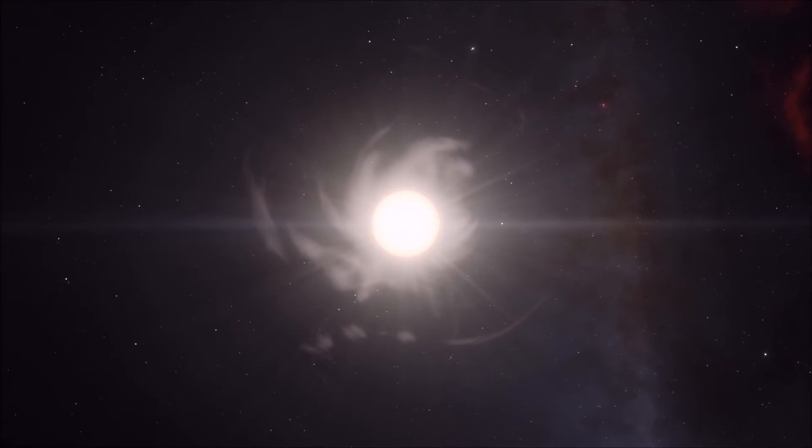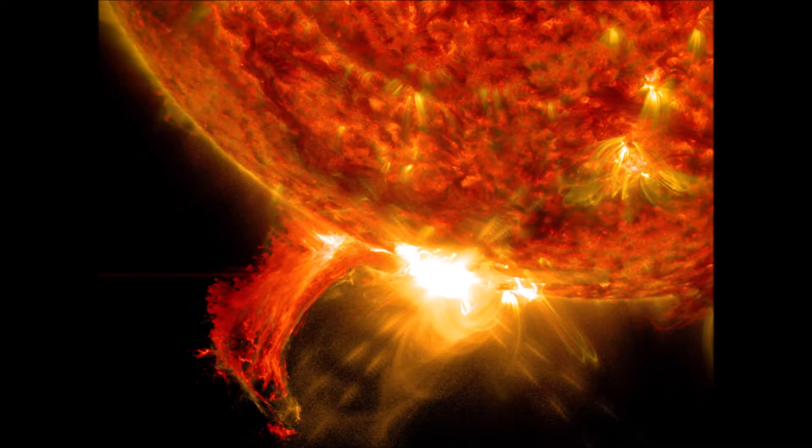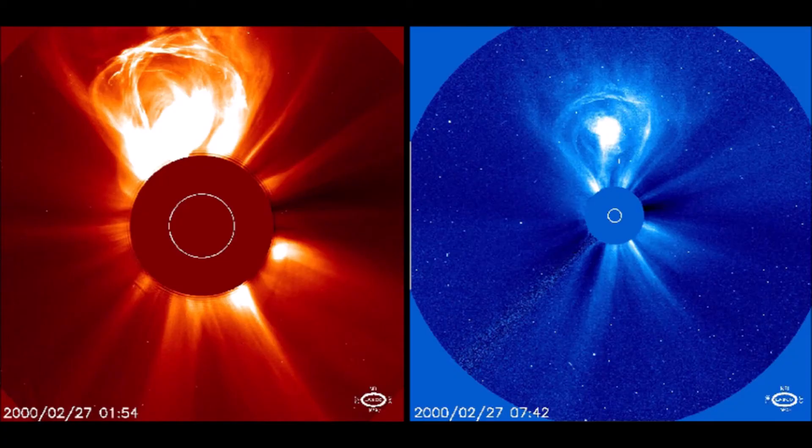However, what is given can be taken away, and it is likely that the sun doesn't always play so nice. Sometimes when the sun gets really angry, it spits on the Earth in a phenomenon known as a coronal mass ejection, or CME for short.